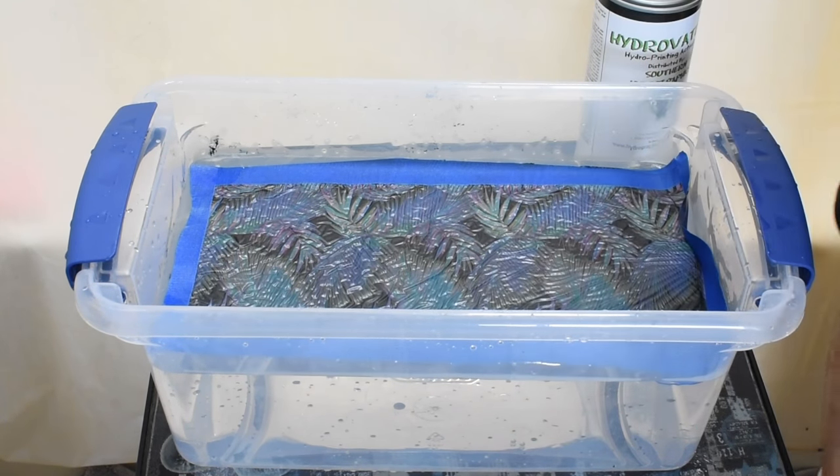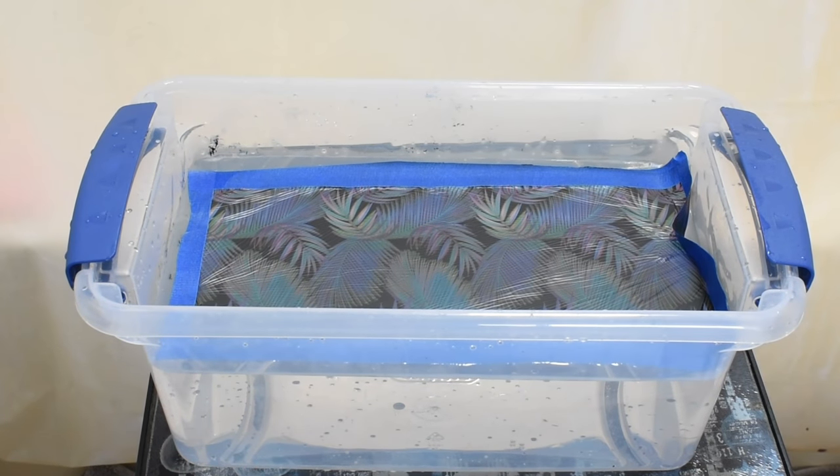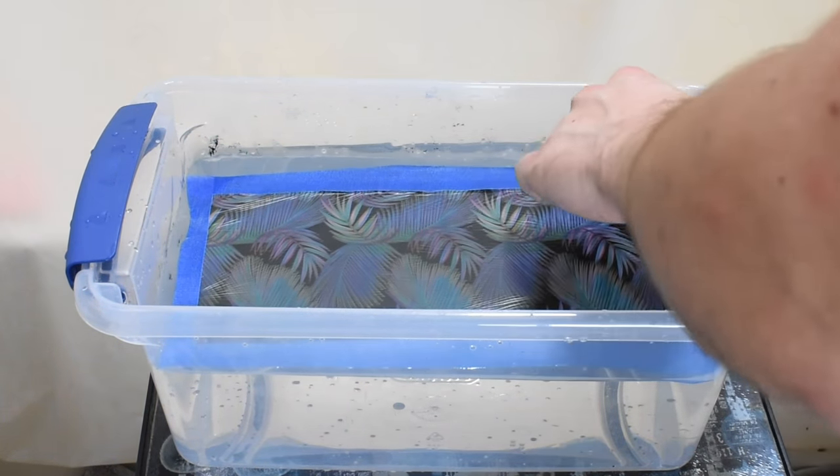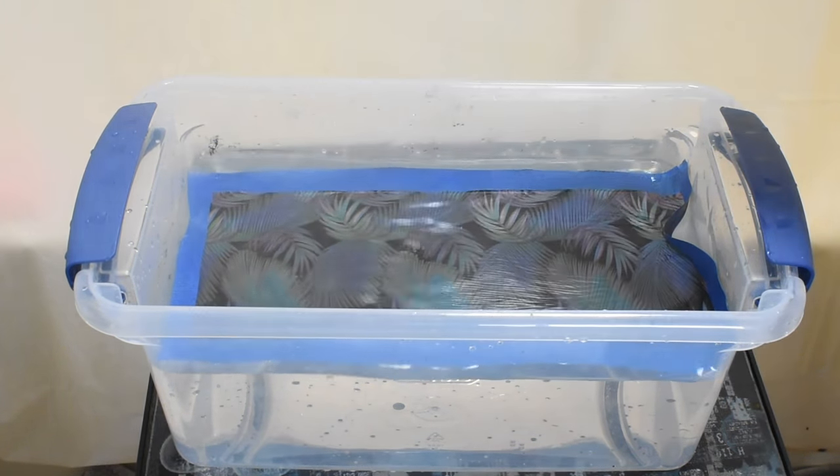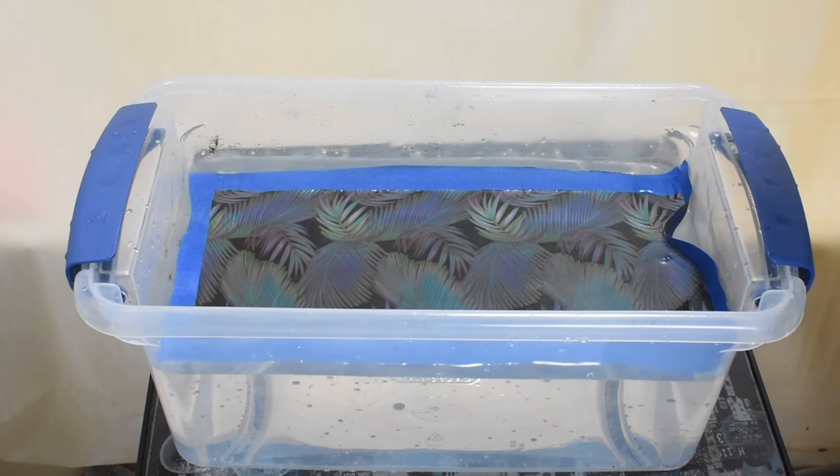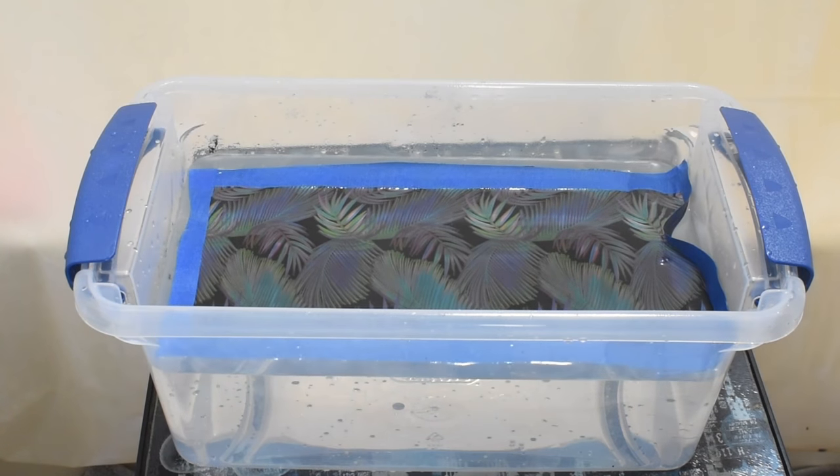Shake the activator well and apply it across the graphic in a grid-like fashion. I would keep the same timer as before going. The graphic needs another minute to activate once it's been sprayed. After the one minute mark of the graphic being sprayed with the activator, it's time to dip the piece.